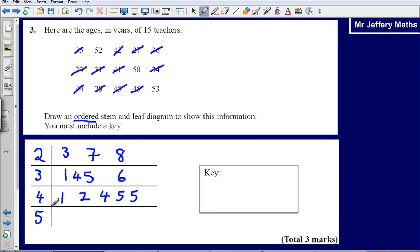Then, the 50s, so I have got 50, got 52, and then 53. So that's all of my numbers in there. Then the key, all that I need to do for the key is show what this table actually means. So, for example, I usually select the first number. So, 2, and then that line down the middle there, then 3, that is representing the number 23.